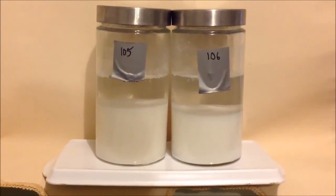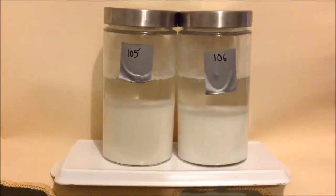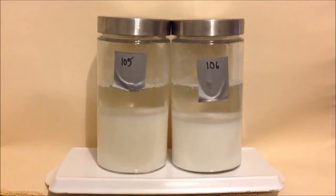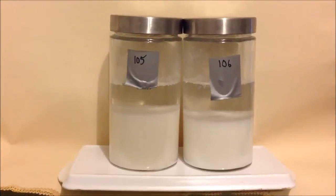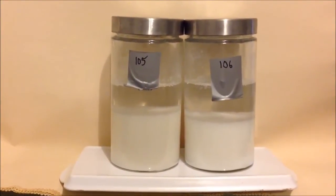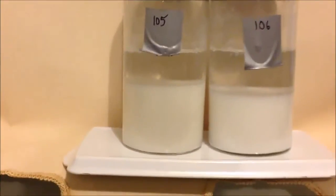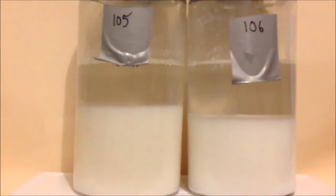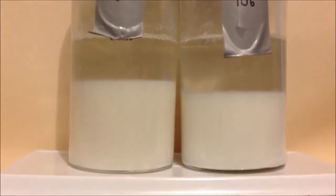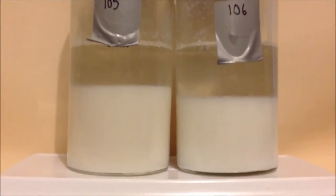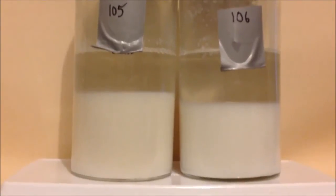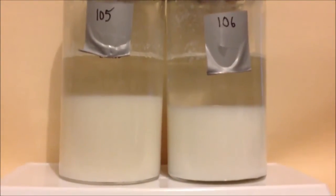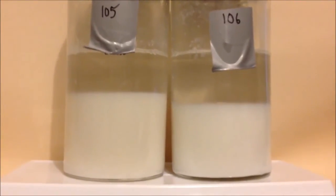There's the result after about seven hours of settling. You can see that 105, which is the magnetic water trap water, has got significantly more precipitate in it. Perhaps if you look at the amount of water left in it rather than the amount of white, you can see that there's more water above the precipitate in 106.